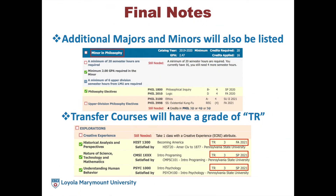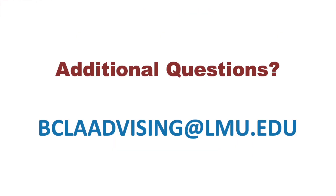Some final notes: if you add an additional major or minor to your program, you will also see its remaining requirements, much like the major section. If you have transferred coursework, you may see grades of TR in your DegreeWorks, which indicates a course has been transferred in. If you have any additional questions, please feel free to email bclaadvising at lmu.edu.